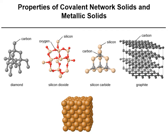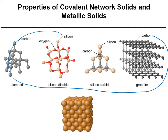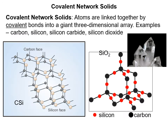This is properties of covalent network solids and metallic solids. These are images of the various types of solids. The covalent network solids are all of these up here and then our metallic solid. An example is shown right here and we'll look at the properties of these various types of solids.